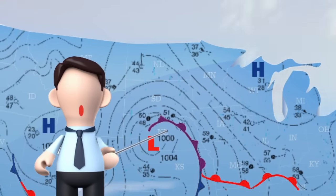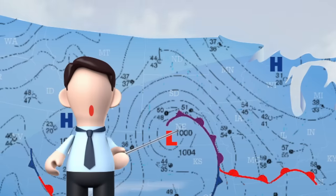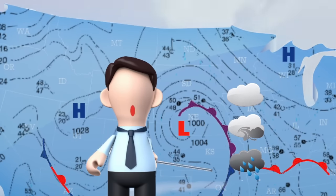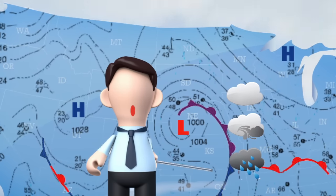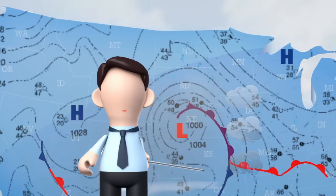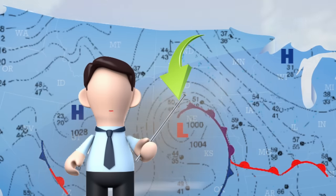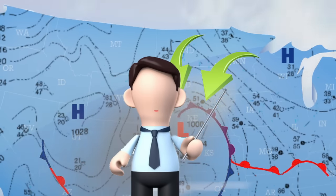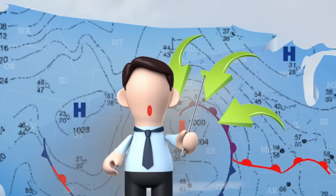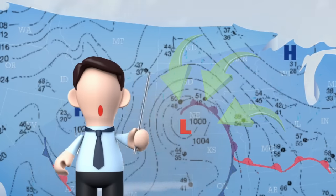The L's represent an area of lower air pressure. Lower air pressure is generally associated with cloudy or stormy weather. Air is moving in a counterclockwise fashion towards the low pressure.